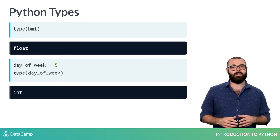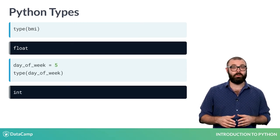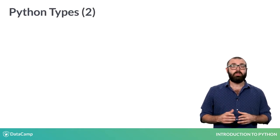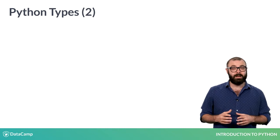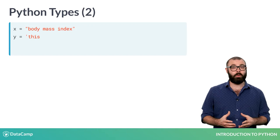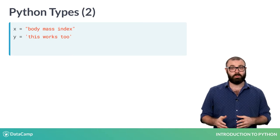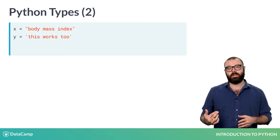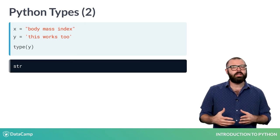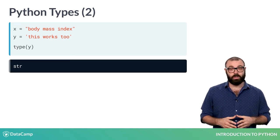To do data science, you'll need more than ints and floats though. Python features tons of other data types. The most common ones are strings and booleans. A string is Python's way to represent text. You can use both double and single quotes to build a string, as you can see from these examples. If you print the type of the last variable here, you see that it's str, short for string.